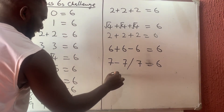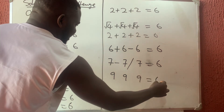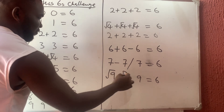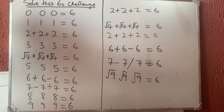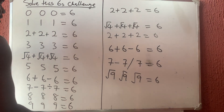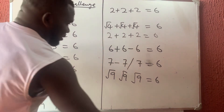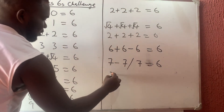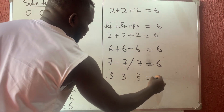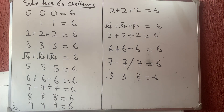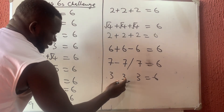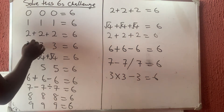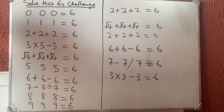What about nine, nine, nine to give us six? Let's first work out three, three, three, since square root of nine is three. For three, three, three: three times three is nine, and nine minus three is six. So for three, three, three I use multiplication and subtraction.